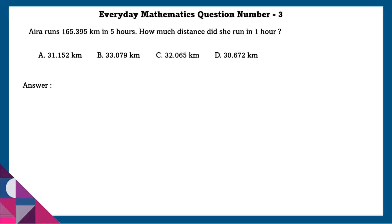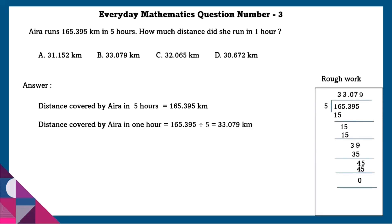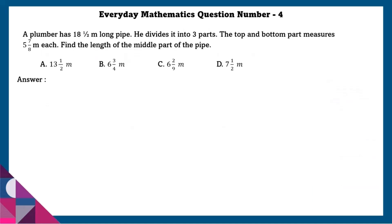Question 3: Aria runs 165.395 kilometers in 5 hours. How much distance did she run in one hour? Distance covered by Aria in 5 hours is 165.395 kilometers. Distance covered by Aria in one hour is equal to 165.395 divided by 5, which is equal to 33.079 kilometers.